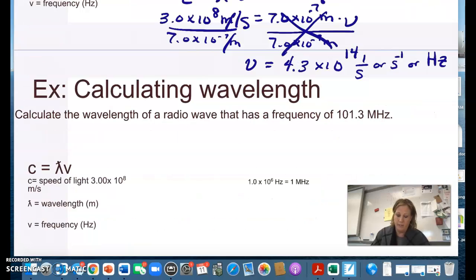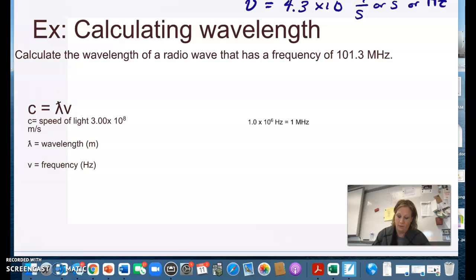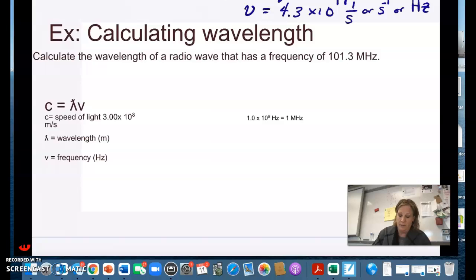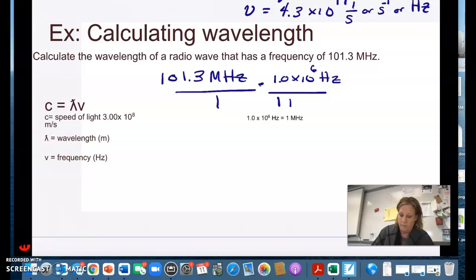The next example we're going to calculate the wavelength of the radio station that we have, 101.3 and the unit is in megahertz so we are going to need to convert that so we know our frequency of that radio wave is in megahertz and we know that there's 1 times 10 to the 6th hertz in 1 megahertz.